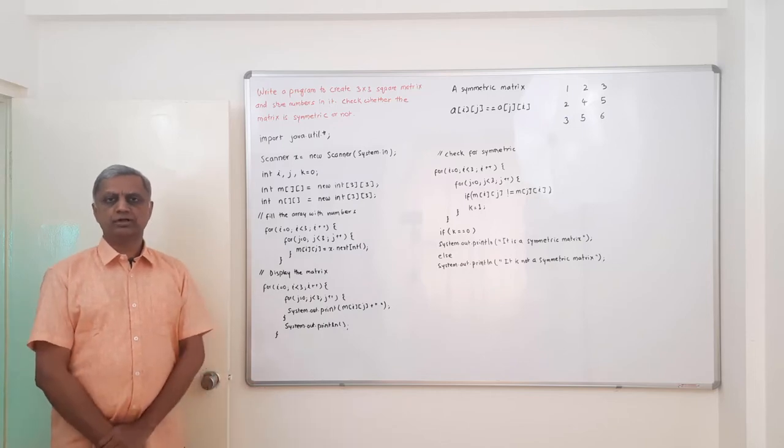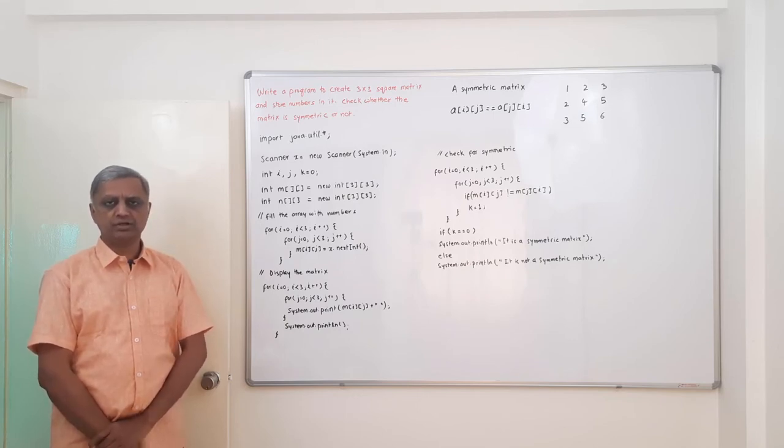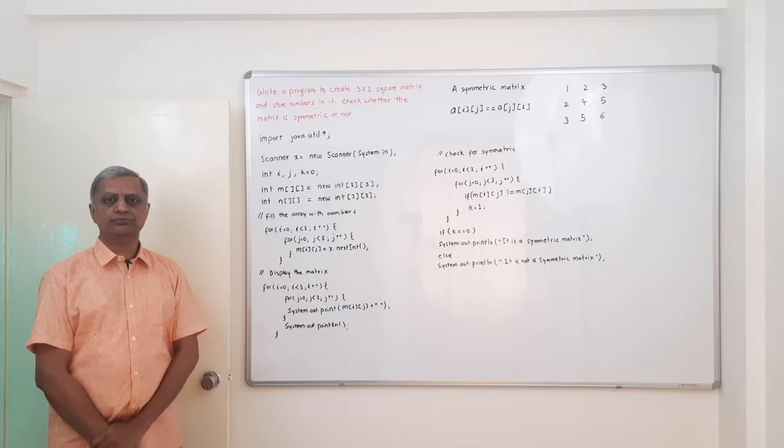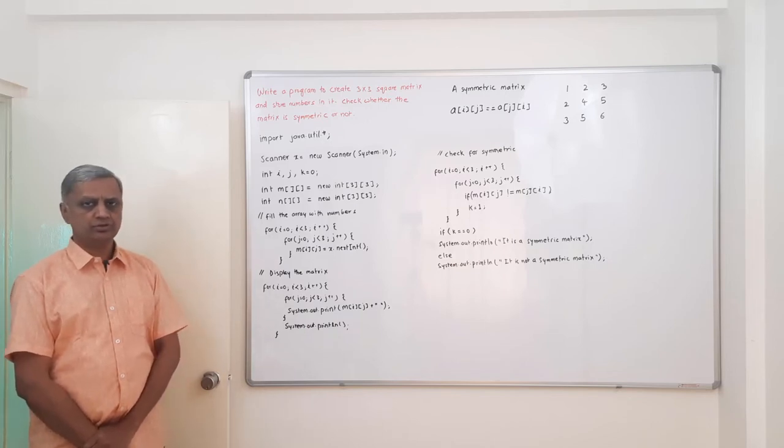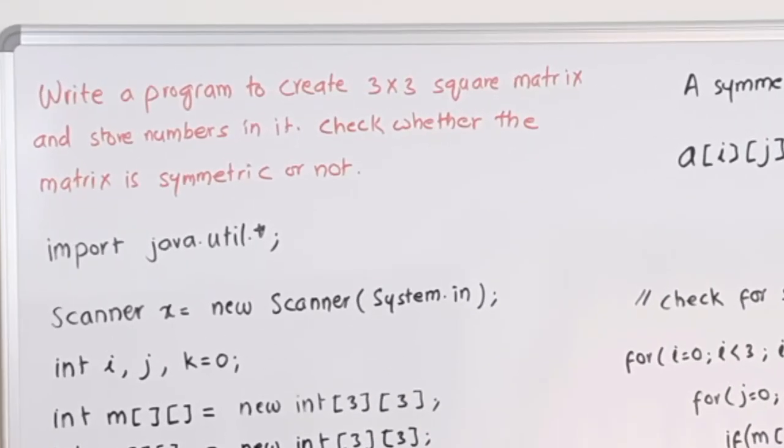So let us look at one more example program in Java with BlueJ for IGCSE Class 10th. This is chapter number three and we are looking at the examples of double dimensional arrays. Today's program is: write a program to create a 3x3 square matrix and store numbers in it. Check whether the matrix is symmetric or not.